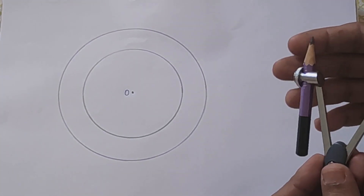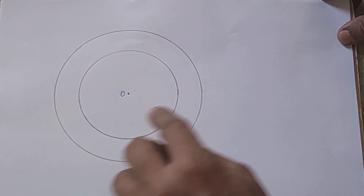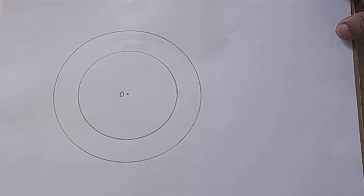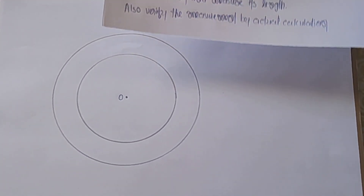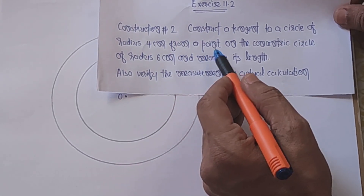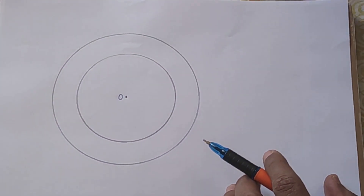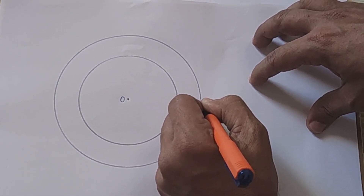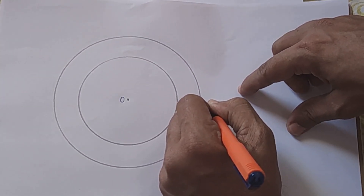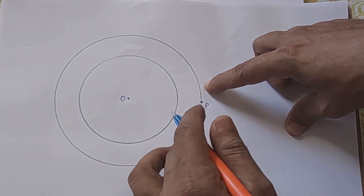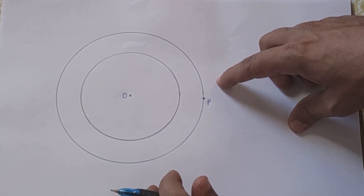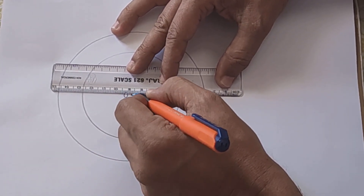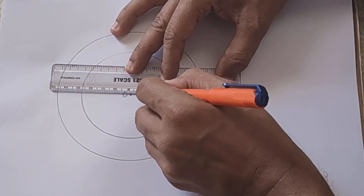Ab jo chota circle hai, smaller circle hai, us circle ko bigger circle ke ek point mein se tangent draw karna hai. 6 centimeter wale circle par ek point lo, use P label kar do. O ko P ke saath join karo. Line segment OP ban gaya. OP kitna aya? Bade circle ki radius jitna, yani 6 centimeter.